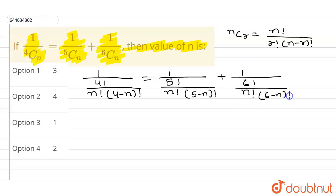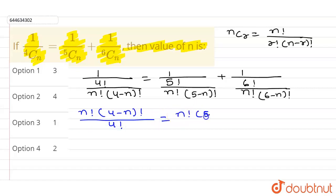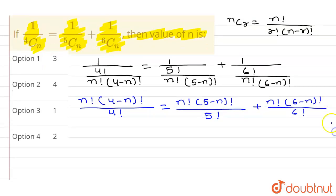Plus 1 upon 6 factorial upon n factorial into (6 minus n) factorial. This can also be written as n factorial into (4 minus n) factorial upon 4 factorial equals n factorial into (5 minus n) factorial upon 5 factorial, plus n factorial into (6 minus n) factorial upon 6 factorial. From here, n factorial can be cancelled from every numerator as common.